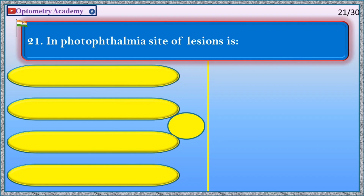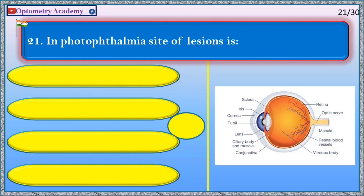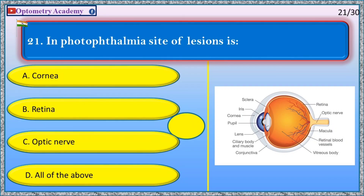In photophthalmia, site of lesions: A. Cornea, B. Retina, C. Optic nerve, D. All of the above.